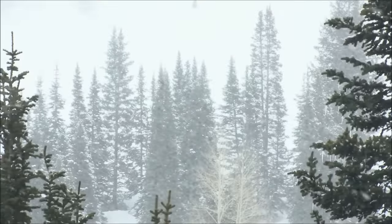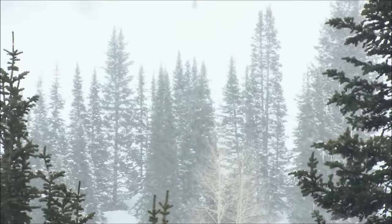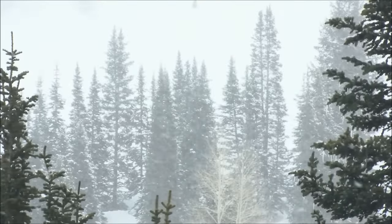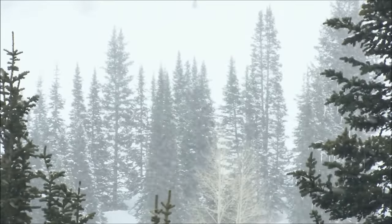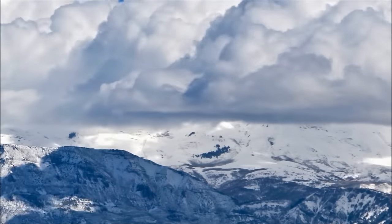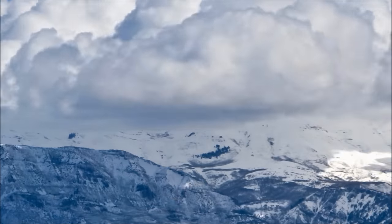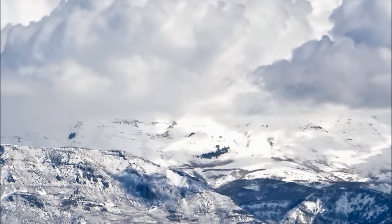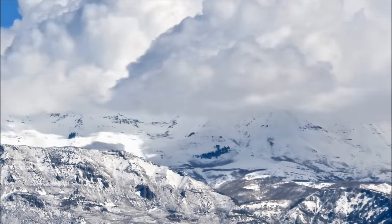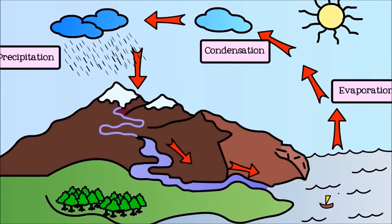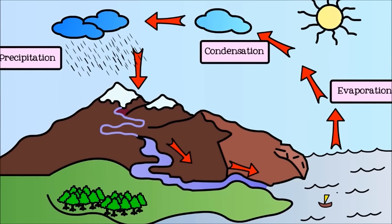Snow may seem magical, but there's actually some interesting science behind the fluffy white flakes that fall from the sky in winter. Just like rain, snow begins in the clouds. Clouds are made of tiny water droplets that have evaporated into a gas, risen up into the sky, and condensed back into water.